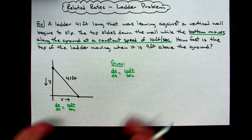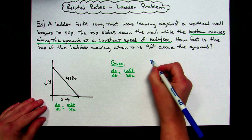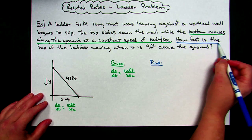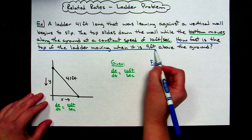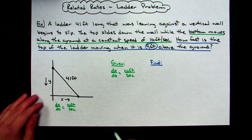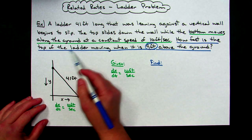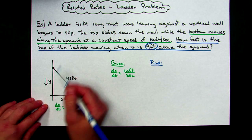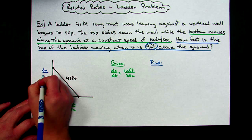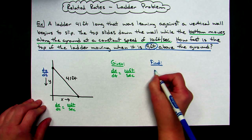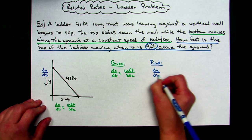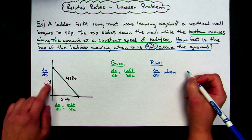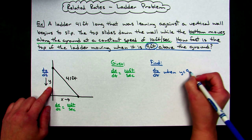After you figure out the given and define it according to a variable, you can find out what they're asking. How fast is the top of the ladder moving when it is 9 feet above the ground? I'm talking about the top of the ladder, which is in terms of Y with respect to time — dy/dt. So that's what I'm trying to find: dy/dt. And since I let this side of the triangle be Y, the condition is when Y equals 9 feet.